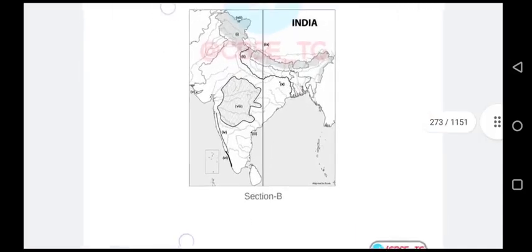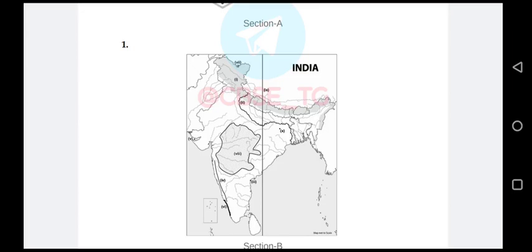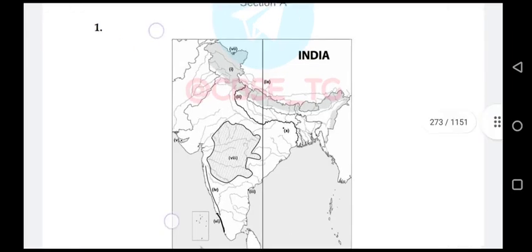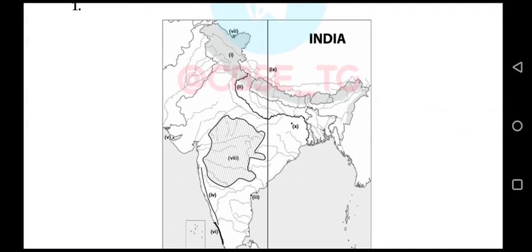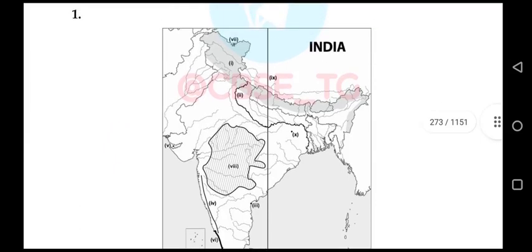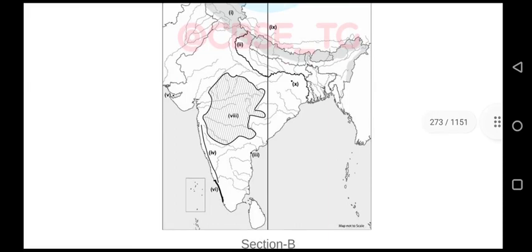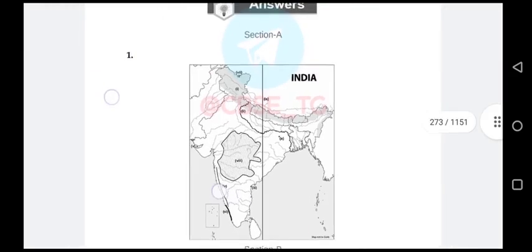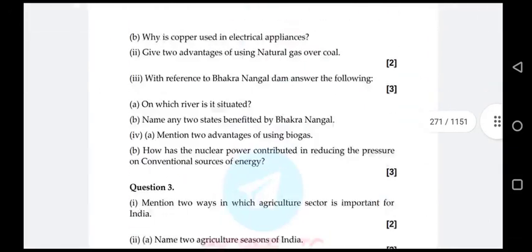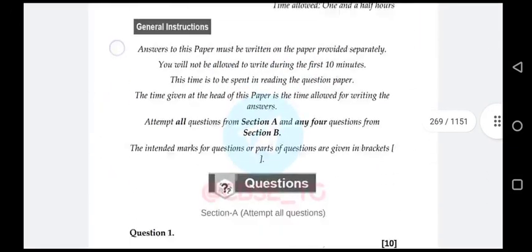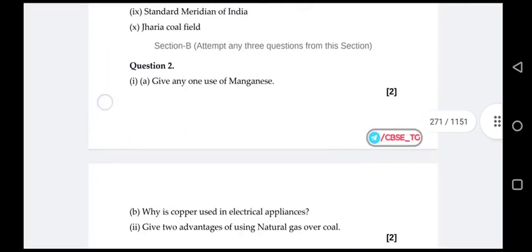I have made the answers — this is the PDF paper solutions. If you want, comment and I'll give the PDF link so you can download it. You have to mark like this: one, two, three, four in Roman numerals, and shade with different shades. Each carries one mark. Section One all questions are finished.